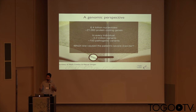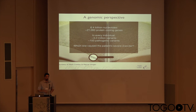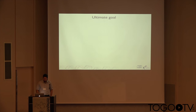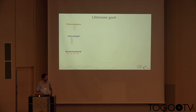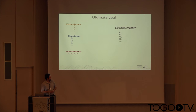From a genomic perspective, you have to look at the whole genome. In principle, every individual has around 3.2 million variants, a hundred of which may very well be pathogenic. The question is, which of those variants or which combination of variants is the one that actually causes the disease? The ultimate goal is to somehow put together phenotypes on one side, genotype on the other side, and perhaps also the environment for common or complex diseases, to get to a list of prioritized candidates or prioritized variants.